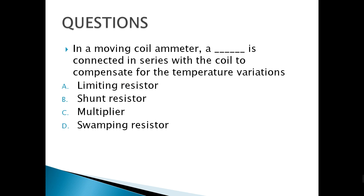In a moving coil ammeter, a blank is connected in series with the coil to compensate for temperature variations. The answer is a swamping resistor. Note the difference: a swamping resistor is connected in series to compensate for temperature, while a shunt resistor is connected in parallel to extend the current range.